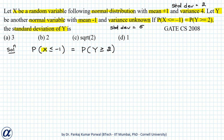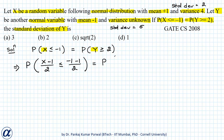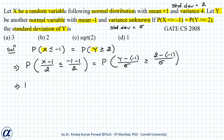Now I will convert X and Y into standard normal random variables by subtracting their means from both sides of the inequality and dividing by their standard deviations. This gives: P((X - 1)/2 ≤ (-1 - 1)/2) = P((Y - (-1))/σ ≥ (2 - (-1))/σ).